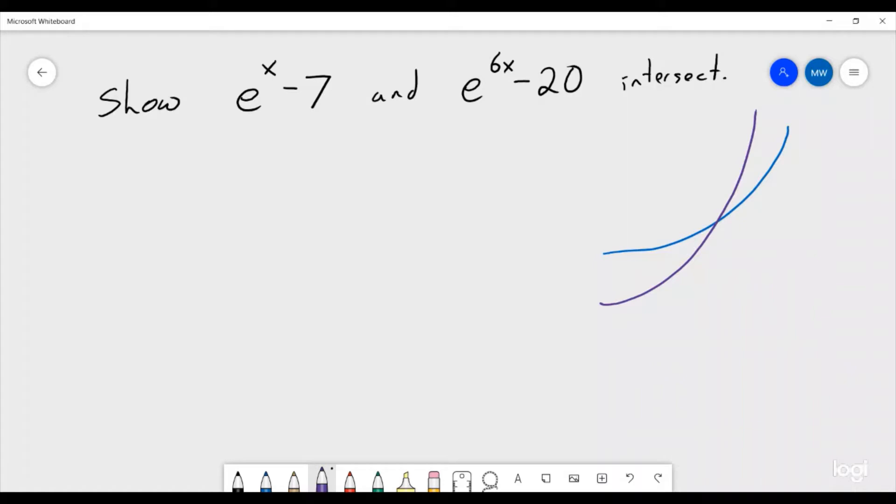So what we would want to do is maybe we could find the x value where they intersect. That would be enough to show that they intersect, but solving for that would probably be fairly complicated. What we could do is create a new function that might be able to help us, and we could use the intermediate value theorem to do so.